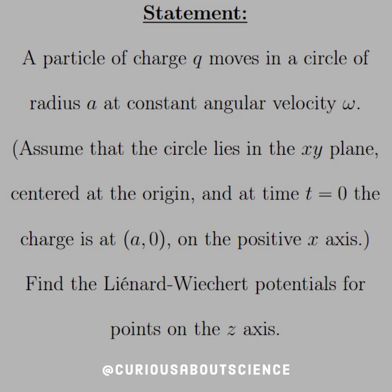For this problem, we have a particle of charge Q that moves in a circle of radius A at a constant angular velocity omega. Let's assume that the circle lies in the xy-plane centered at the origin. At time t equals 0, the charge is at the coordinate (A, 0) on the positive x-axis. We need to find the Liénard-Wiechert potentials for points on the z-axis.